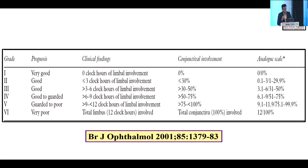The Dua classification, which everybody is familiar with, uses grades one to six, assessing clock hours of limbal involvement and percentage of conjunctival involvement. Grade one and two can be managed medically and conservatively. Grade three onwards requires more intervention. Grade six is the most serious, with the worst prognosis, where all of the limbus is involved and conjunctival involvement is 100%.